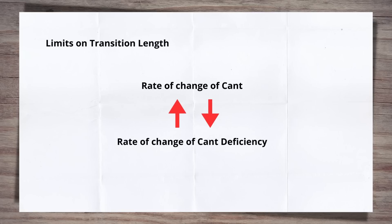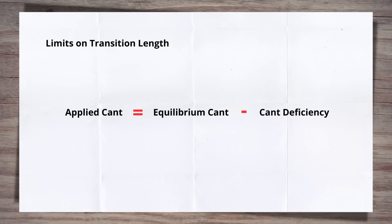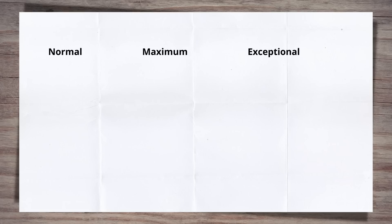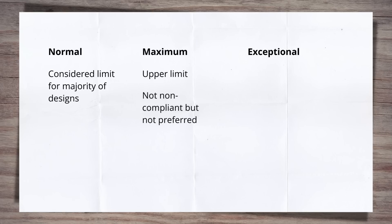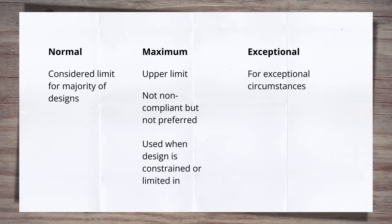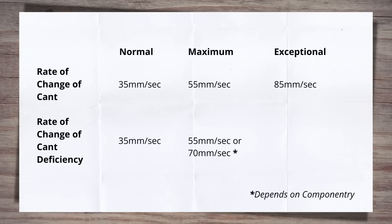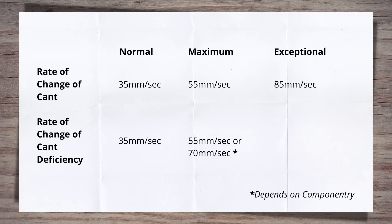This is because cant and cant deficiency are linked through equilibrium cant. Remember, if this is not something you've come across, check out my video on cant. The standard gives three values, normal, maximum and exceptional. The normal value should be considered the limit for the majority of instances. The maximum value is an upper limit that, while not non-compliant, is considered non-preferrable. It should be used when the design is constrained or limited in some way. The rate of change of cant also has an exceptional limit. This is for, you guessed it, exceptional circumstances and requires agreement with key stakeholders before use. So let's see these values.